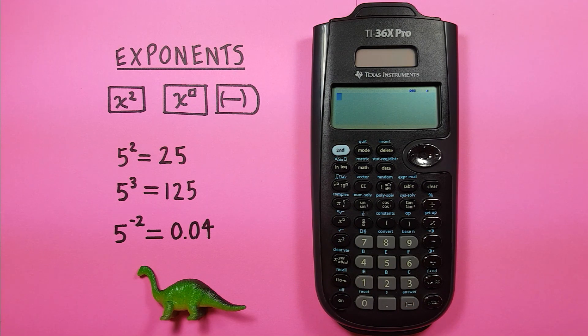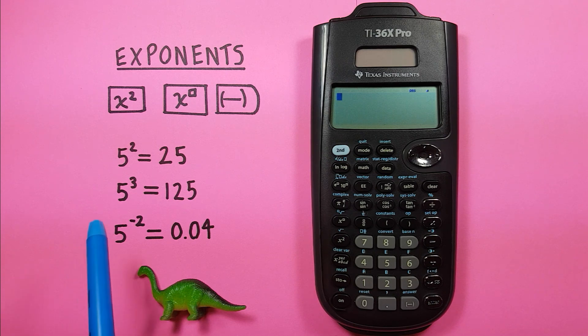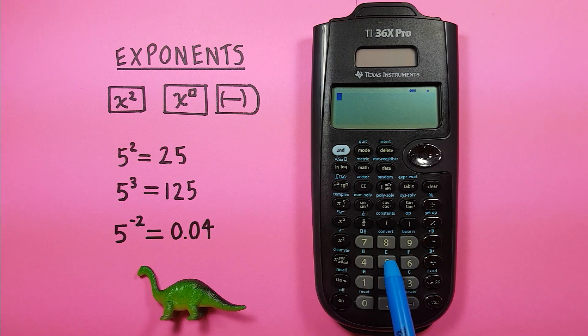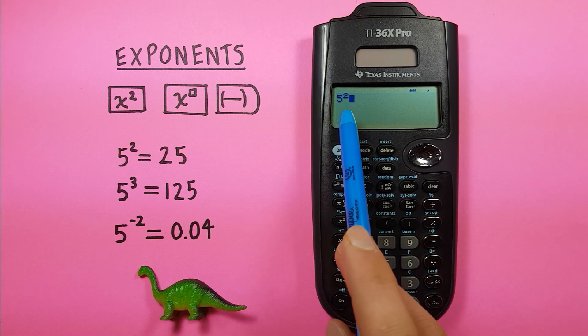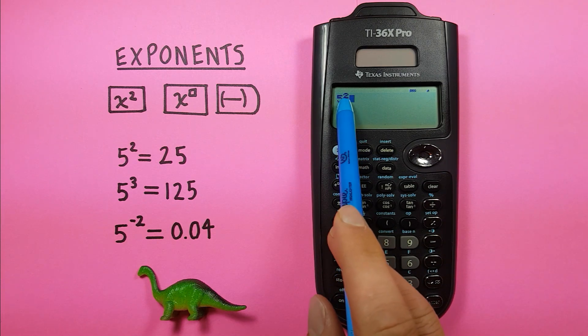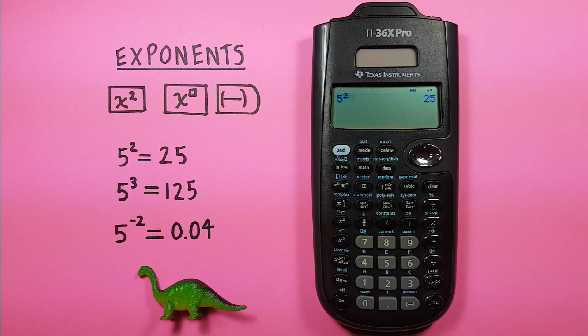For the basics, if we just want to square a number, like let's say 5 squared, all we have to do is place 5 on the screen and then press the x squared key like that. You can see we have a 2 in the exponent position now and we press enter. And we have 5 squared equals 25.